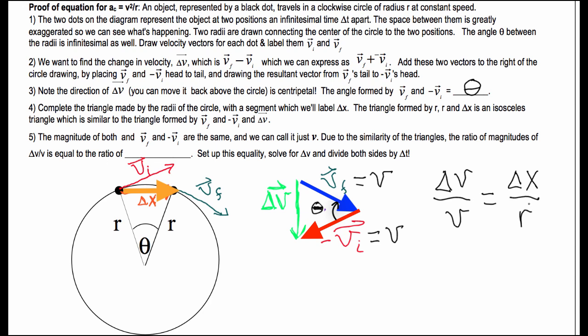So that, does everyone buy that, buy similar triangles? That is a true statement. Are we good on that? Cool. The last thing we got to do, so I'm just going to write it right here. The ratio of delta V to V is equal to the ratio of delta X over R.